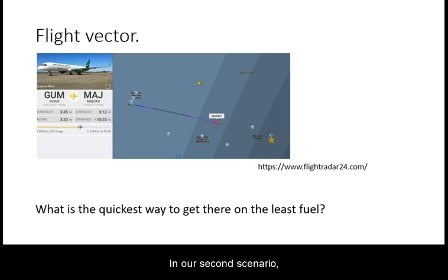In our second scenario, we are trying to find the shortest route between Guam in the Mariana Islands and Majuro in the Marshall Islands. This has uses in cutting down on flight time and fuel use.